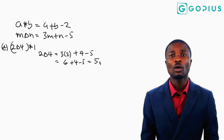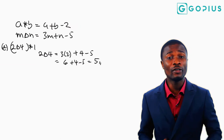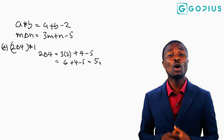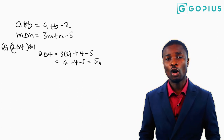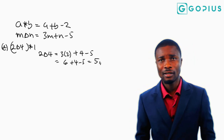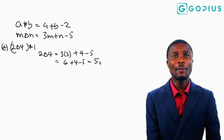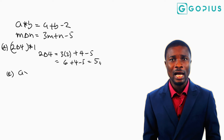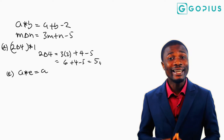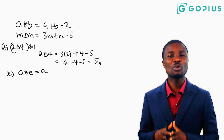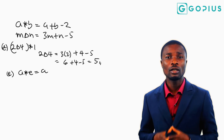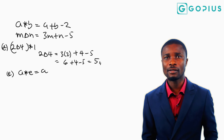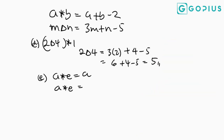Question e asks us to find the identity element under star. The identity is a number that when you operate with another number it doesn't change it — like 2 plus 0 is 2, making 0 the additive identity. To find the identity e under star, we define a star e should equal a. Using a star b equals a plus b minus 2, we get a star e equals a plus e minus 2.